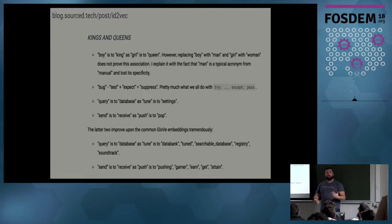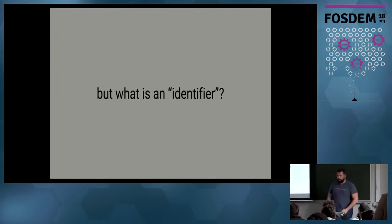So it allows you to do cool things, like saying that the distance from boy to king is the same as from girl to queen. And it allows us from source code to understand that query is to database as send is to receive, or push is to pop. This starts to be quite interesting because we're actually extracting information. This article is really interesting. It's right there in the deck, and I definitely recommend it. It's quite long, but it has bubbles, so it's good.